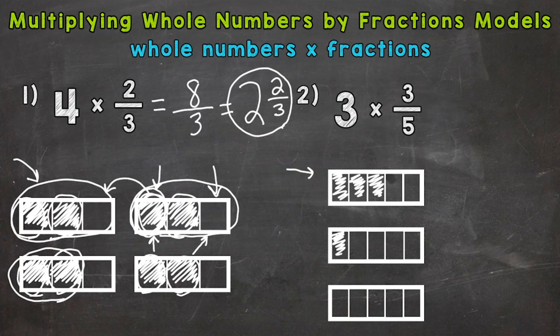One-fifth, two-fifths, three-fifths. So we need one more group, one-fifth, two-fifths, three-fifths.